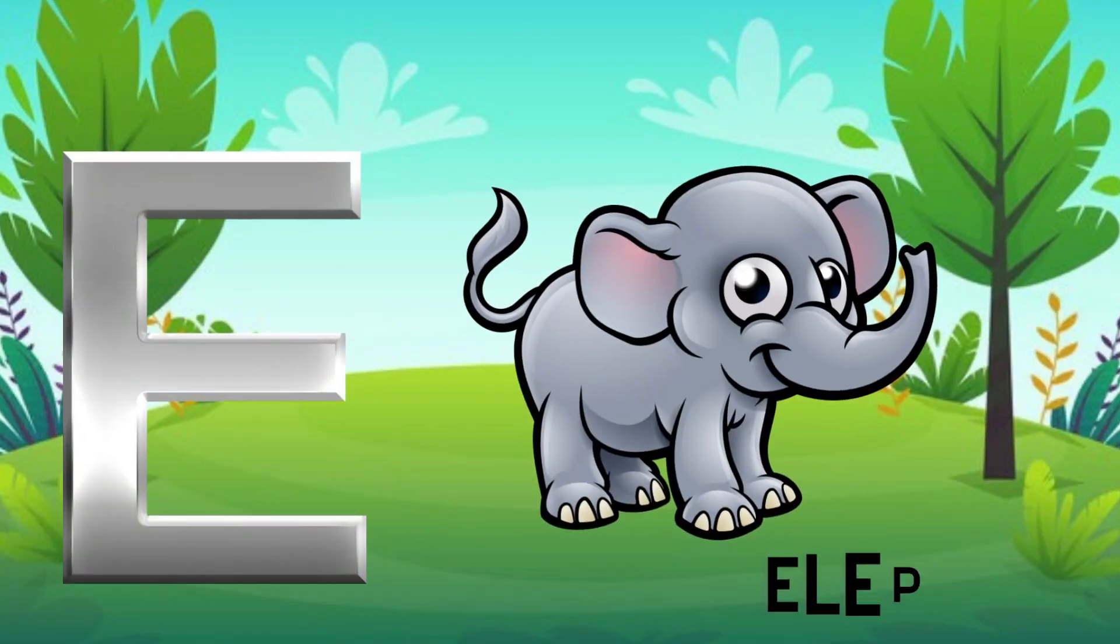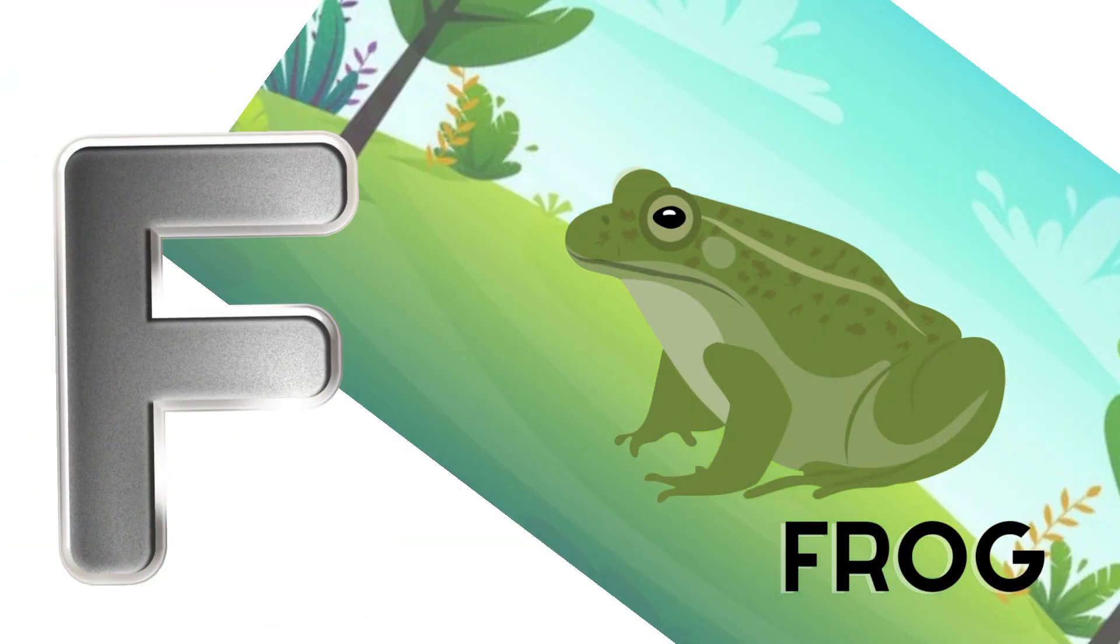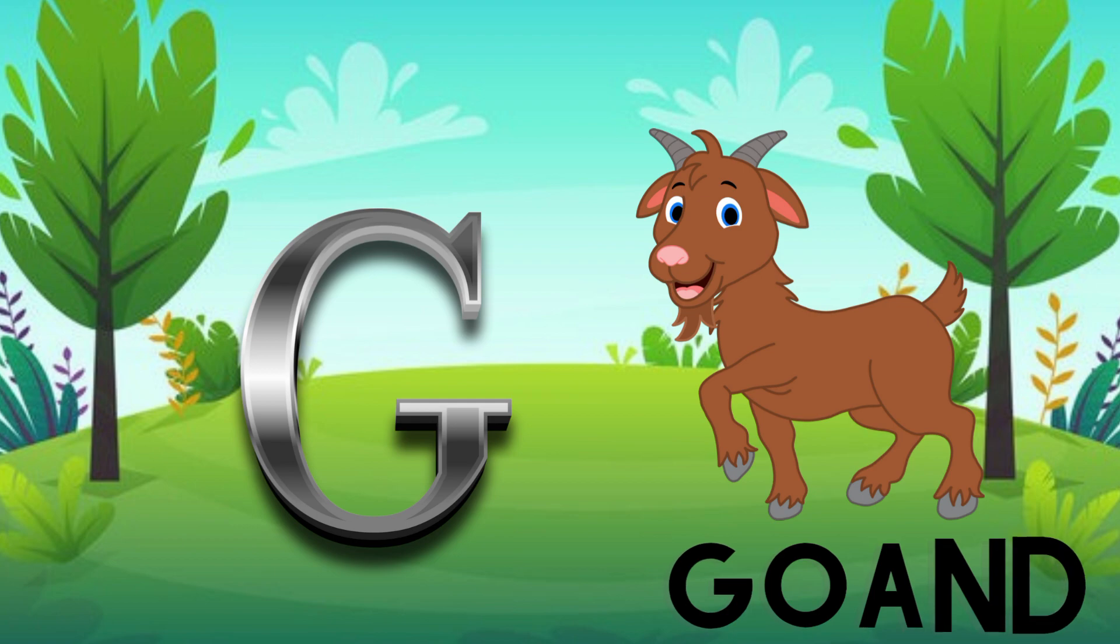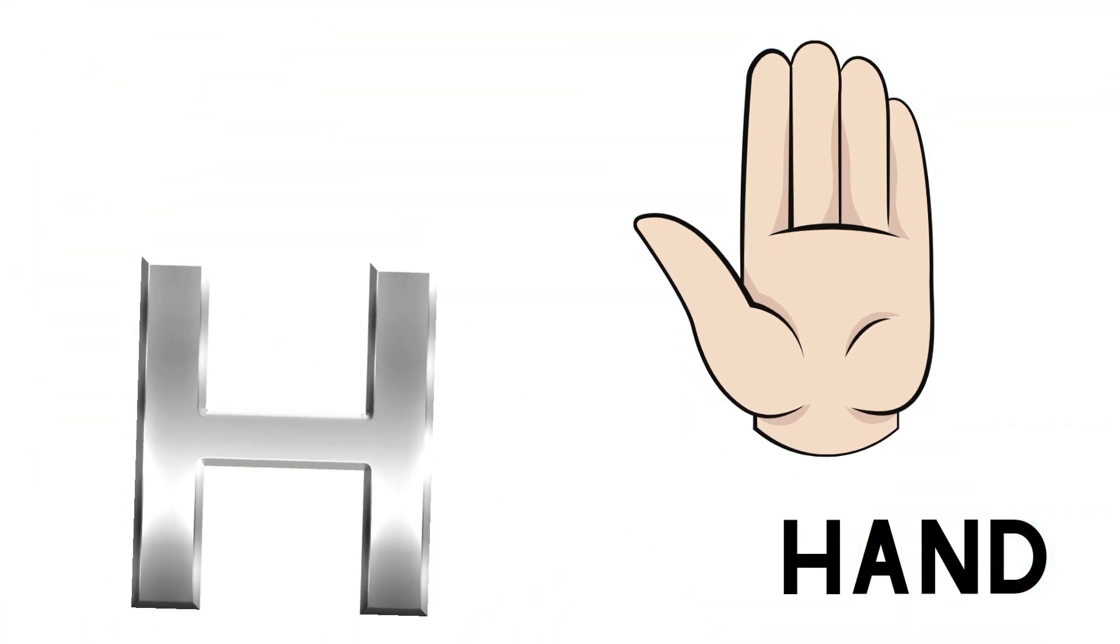E is for elephant, e-e-elephant. F is for frog, f-f-frog. G is for goat, g-g-goat. H is for hand, h-h-hand.